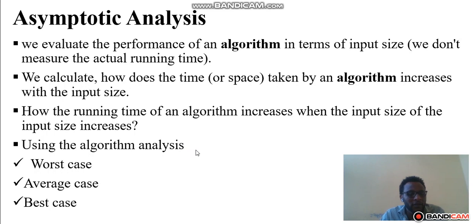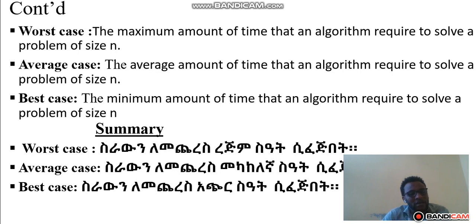Using algorithm analysis, we will define worst cases, average cases, and best cases. Worst case is the maximum amount of time that an algorithm requires to solve a problem of size n. Average case is the average amount of time an algorithm requires to solve a problem of size n. Best case is the minimum amount of time an algorithm requires to solve a problem of size n.